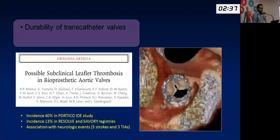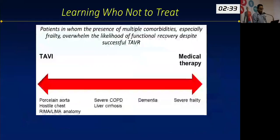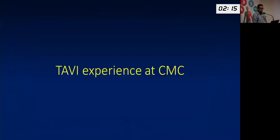Subclinical leaflet thrombosis is another important issue. We don't yet know the clinical impact, but rates as high as 40 percent have been reported in some valve series. Finally, patients who should not receive TAVI are those who are severely frail or severely demented. All other patients could potentially benefit from TAVI or surgical valve replacement.